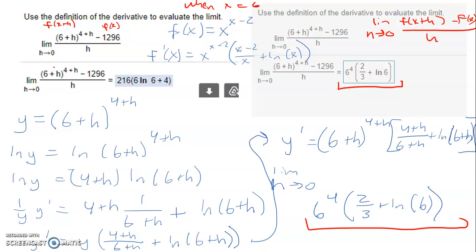So you can either use L'Hôpital's rule and then take the derivative of this and you use the technique of logs, or you recognize that this is the function x to the power of x minus 2, and we're looking at when x is 6, and then use the technique of logs to get the derivative that way.